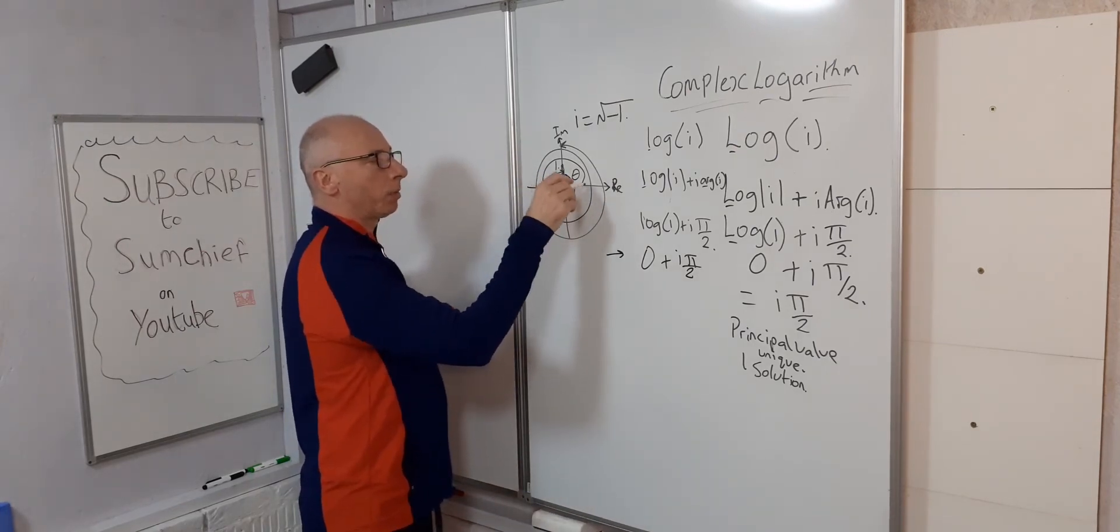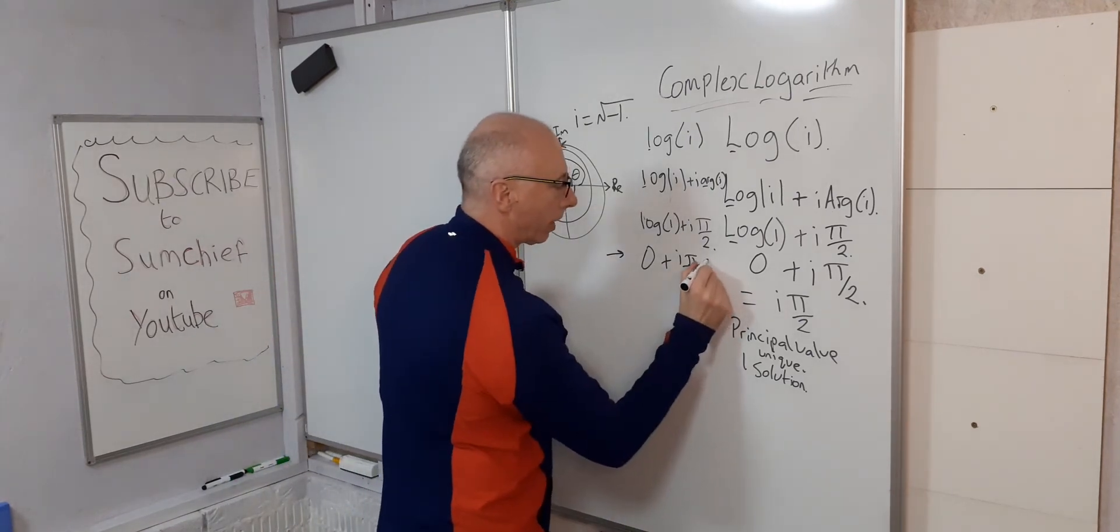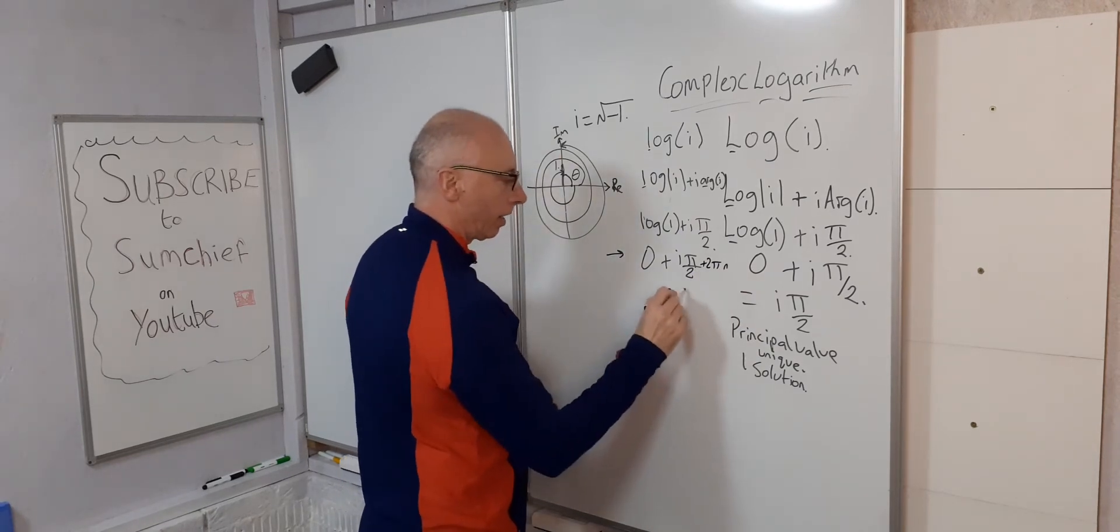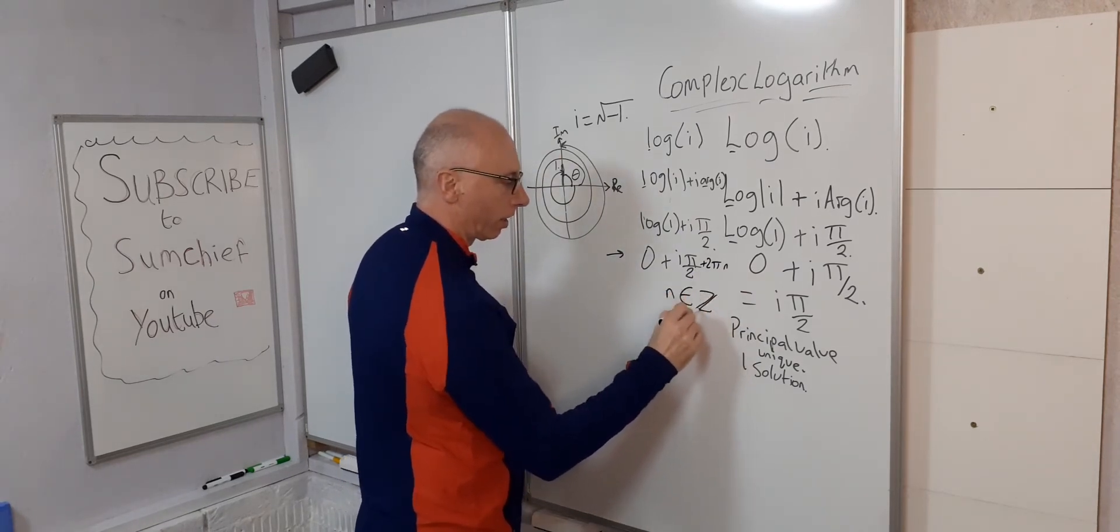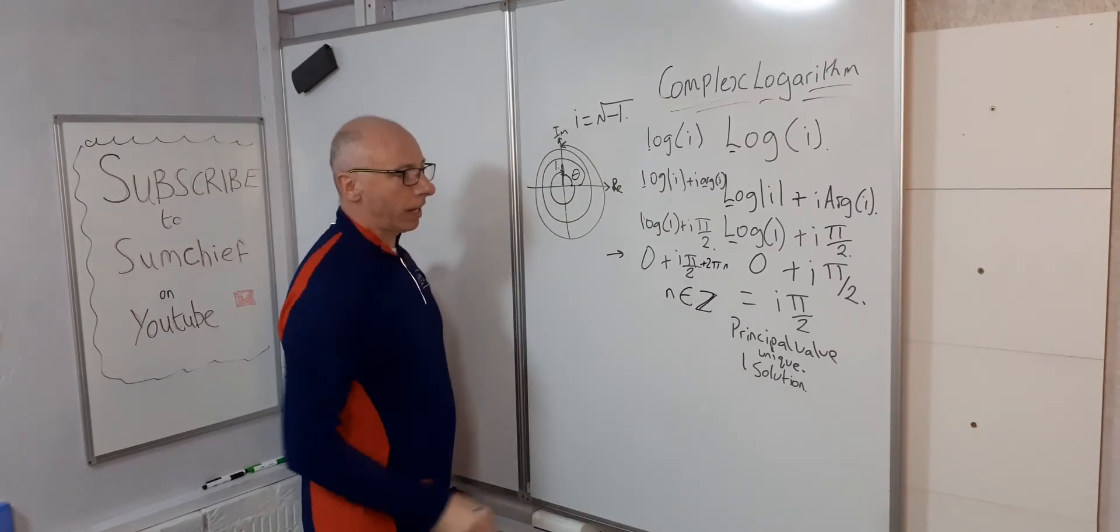So, each time we rotate, we rotate by 2 pi. So just to add at the end, we add 2 pi n. Where n is just an integer. Any integer. It can be a negative or positive. And that's our solution.